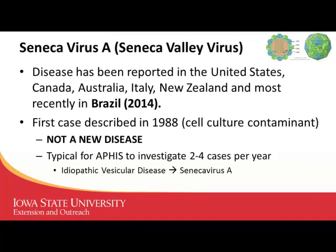It's not a new disease — it's been reported since the late 1980s. Back then, it was just a handful of cases where they would get calls about vesicles, investigate, test for the four foreign animal diseases, all would show up negative, and they got lumped into a bucket called idiopathic vesicular disease. They were able to describe it in the late '80s, but up until last summer, we'd only see two to four cases a year across the United States.